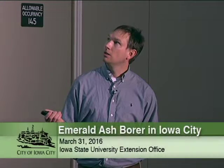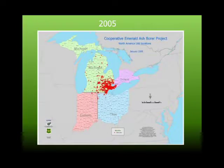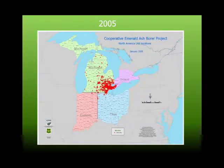In 2002 it hit Detroit and we started tracking it. We found out early on that emerald ash borer is not a pest we could eradicate. The problem is that usually when we find it, it's already been there for several years. By 2005, just three years after first finding it in Detroit, it had spread into Indiana, Ohio, and parts of Ontario. By 2009, it was spreading even further with satellite populations building up.